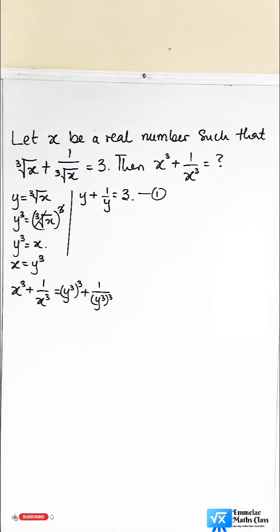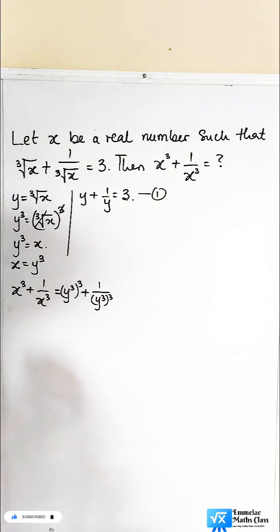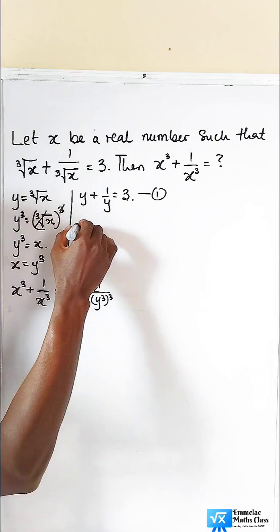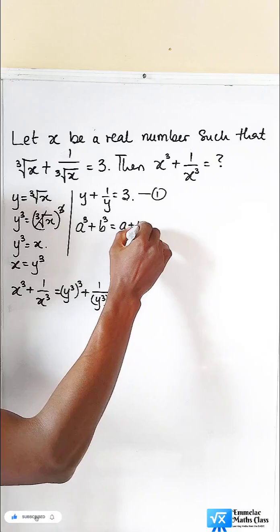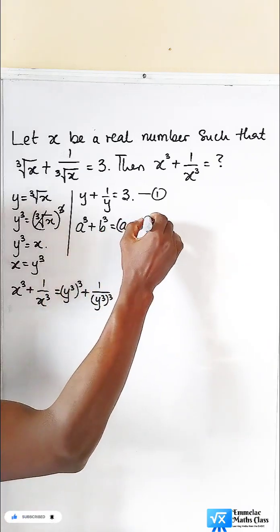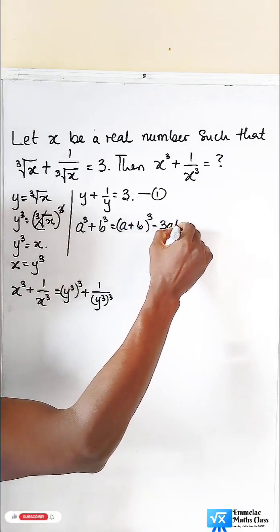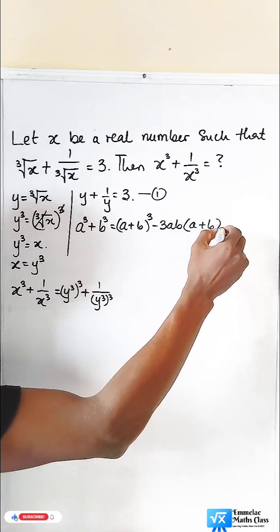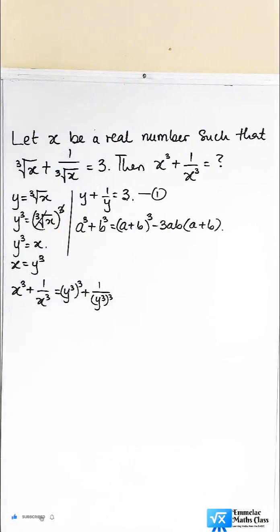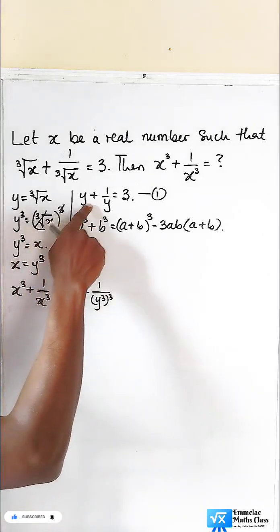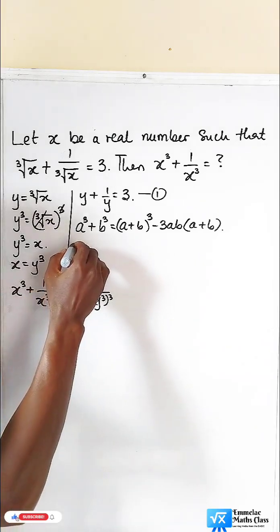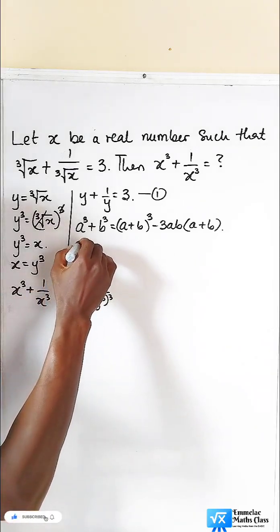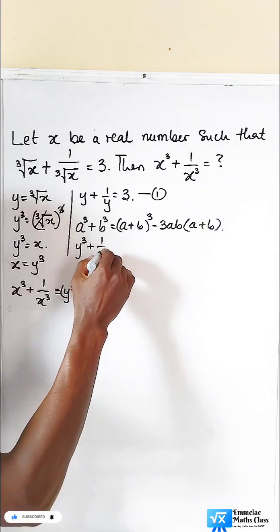Now let us move further. First, let us recall the algebraic sum of two cubes identity: a cubed plus b cubed equals (a + b) cubed minus 3ab(a + b). Now, to this point where we have y plus 1 all over y equals 3, let's find an algebraic expression for y cubed plus 1 all over y cubed.